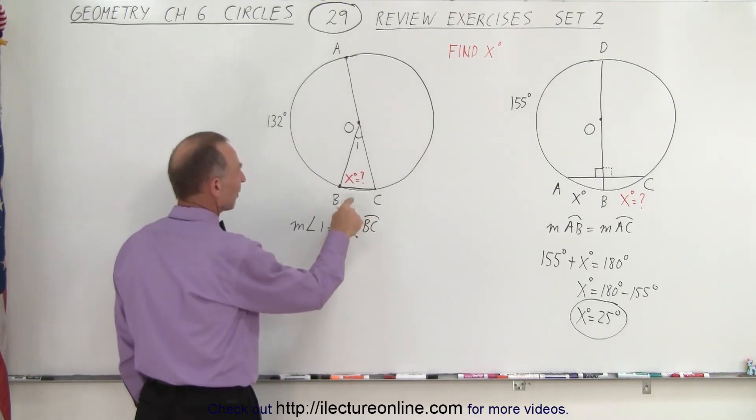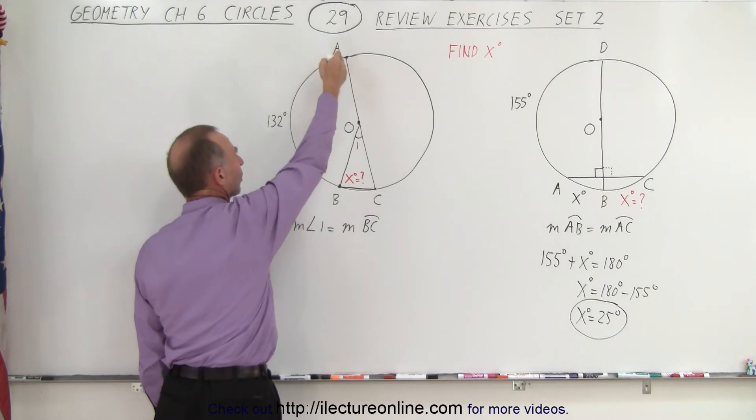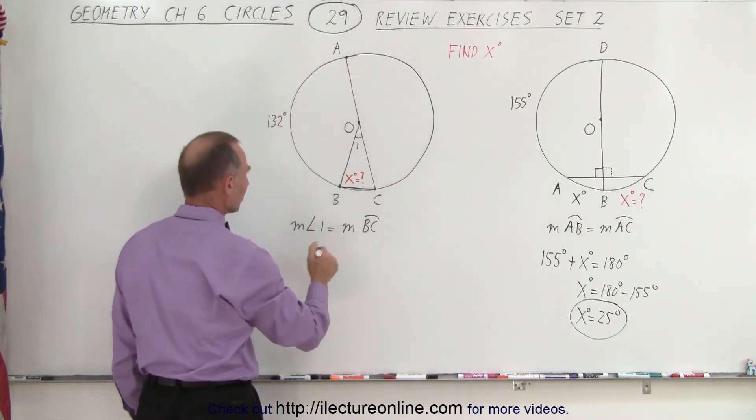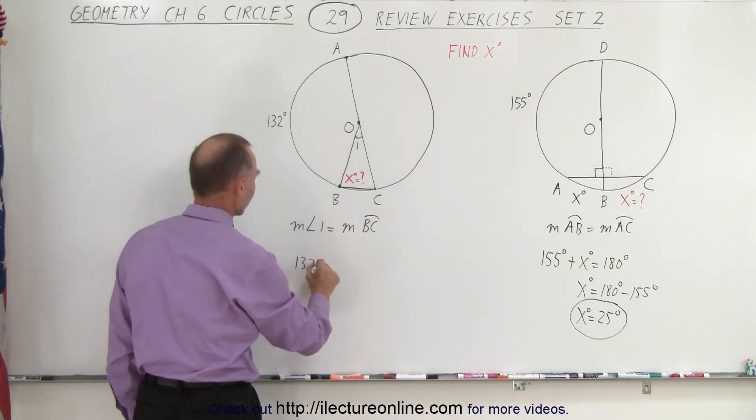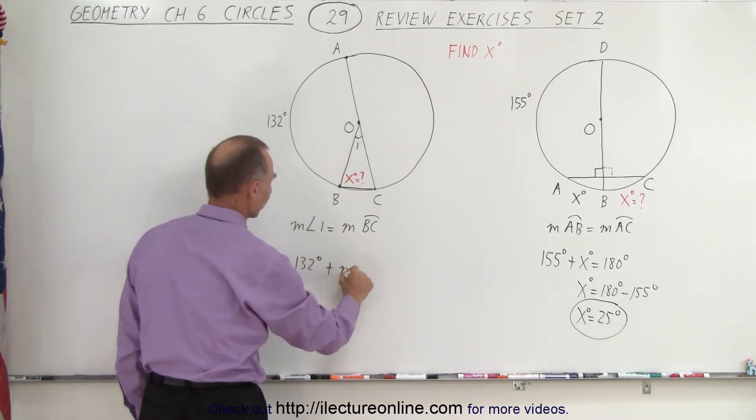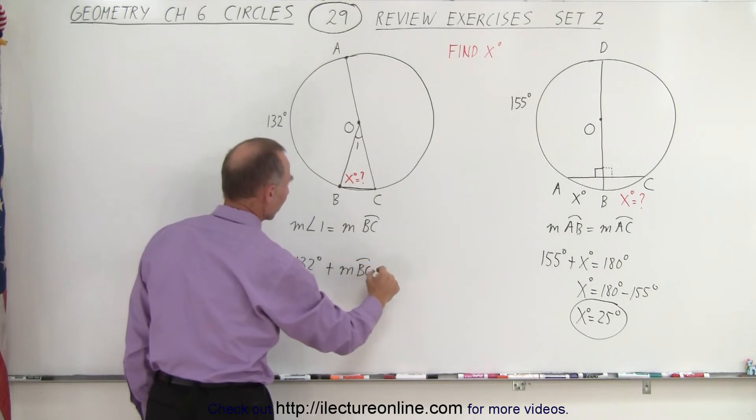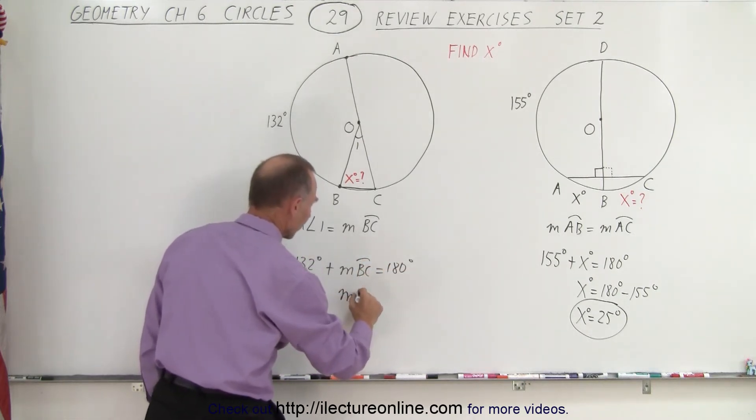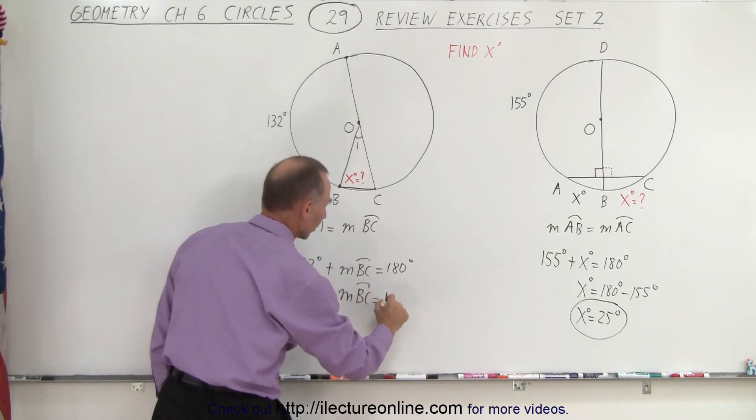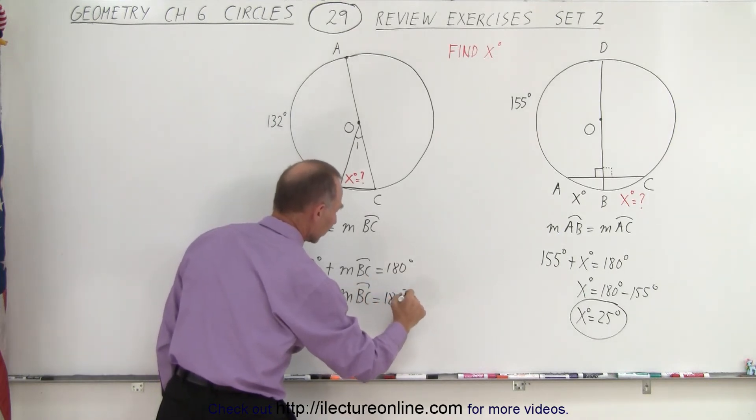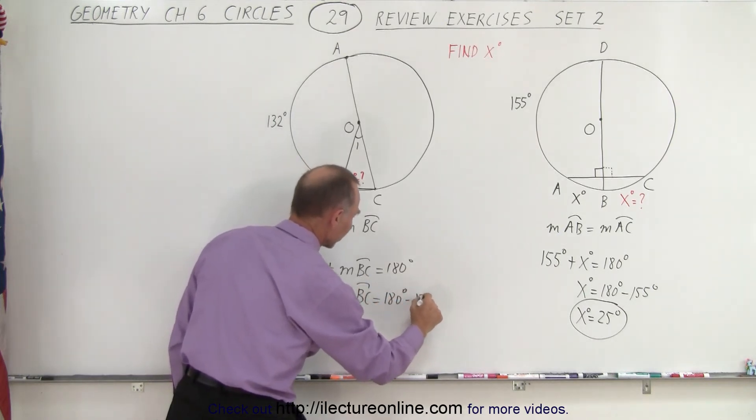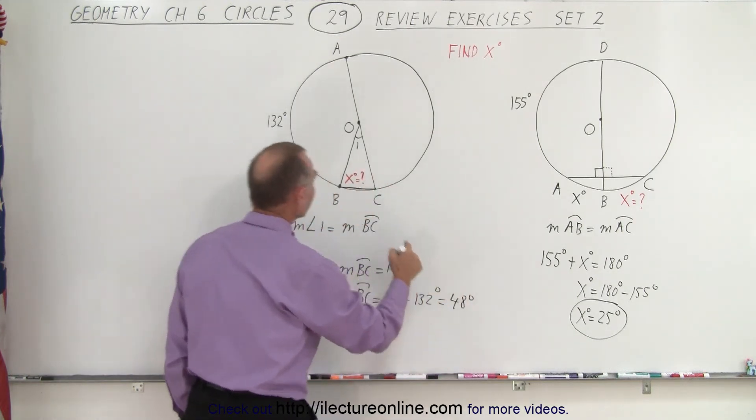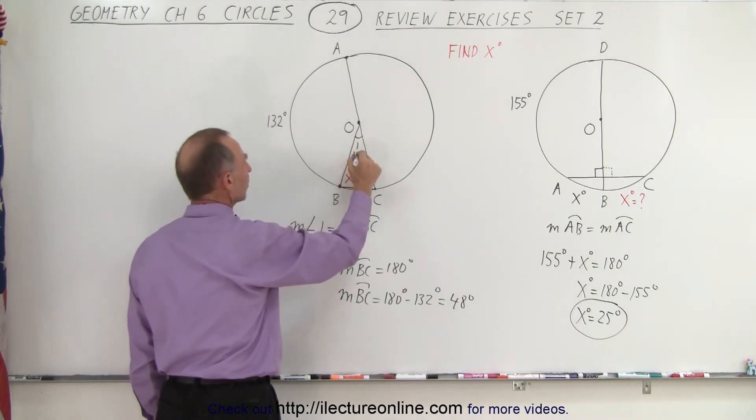And of course, we can find out what this is equal to because we know this line from A to C is the diameter. That makes this a semi-circle, which means that 132 degrees plus the measure from B to C must add up to 180 degrees. That means the measure from B to C must equal 180 degrees minus 132 degrees, and that would be 48 degrees. So we know that the measure of angle one is 48 degrees.